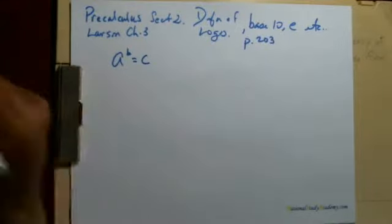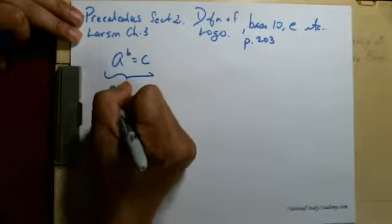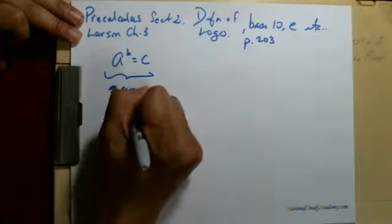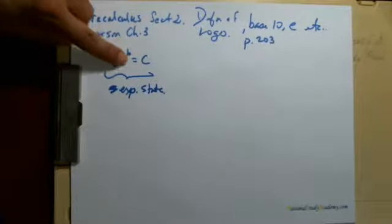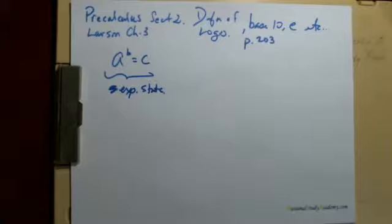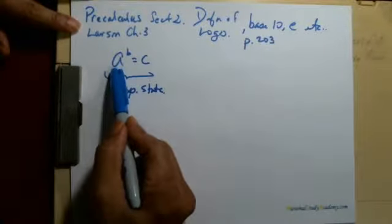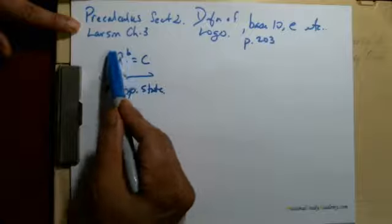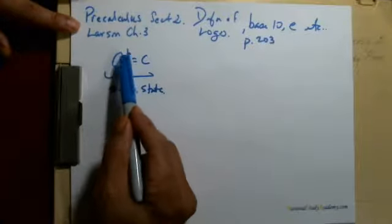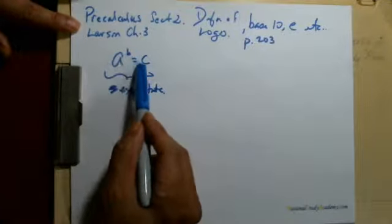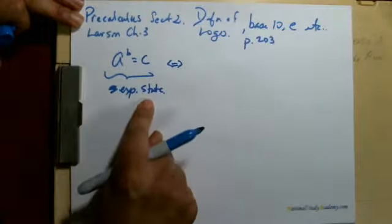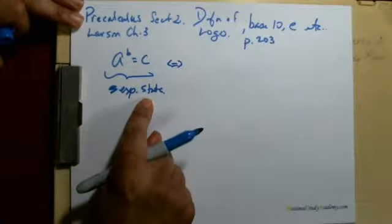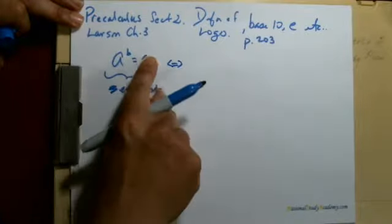First of all, I just wrote this part out. This is called the exponential state. So you have base A to the number B equals C. Again, base A - you have to read it that way, this is the base we're looking at because it has the exponent. Base A to the exponent B equals number C. Now this is called the exponential state or exponential form. A lot of books call this form. I like to call this state because it's a state of being for this equation.